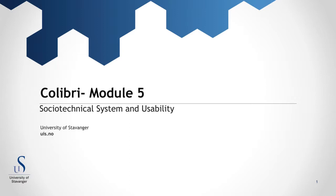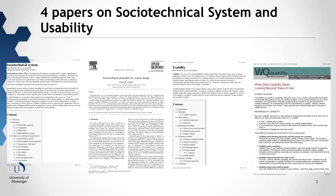Welcome to Module 5, Advances in Systems, part of the Colibri project. This part is about the socio-technical system and usability, and it consists of four papers.